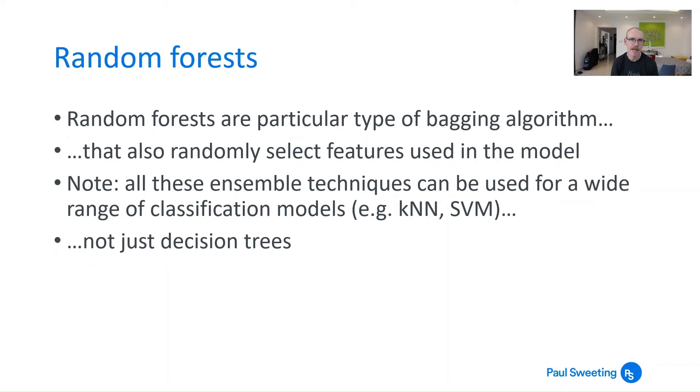Now all of these ensemble techniques can be used for a wide range of classification models. So you don't just have to use them in decision trees. KNN, support vector machines, all these can be augmented by bagging and boosting your data. So it's not just something for decision trees.